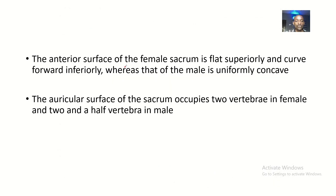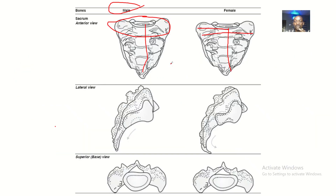The anterior surface of the female sacrum is flat superiorly and curved forward inferiorly, whereas the anterior surface of the male sacrum is uniformly concave. So in females it is flat but curves as it goes down, while in males it just maintains a normal concave curvature throughout.